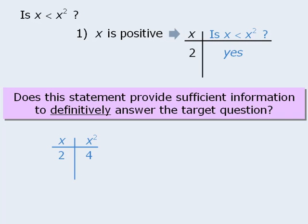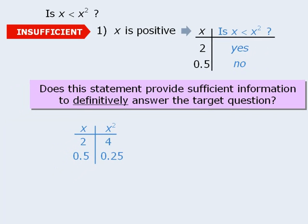Now let's try another value for x. If x is positive, then x could also equal 0.5. When x equals 0.5, x squared will equal 0.25. So when x equals 0.5, the answer to our target question is no — x is not less than x squared. So x equals 2 and x equals 0.5 both satisfy the condition in statement 1 that says x must be positive. However, in one case the answer to our target question is yes, and in the other case the answer is no. Since we cannot definitively answer the target question, statement 1 is not sufficient.